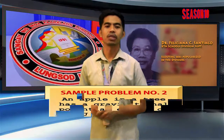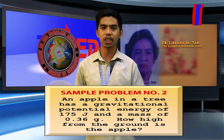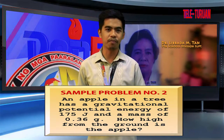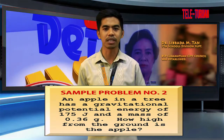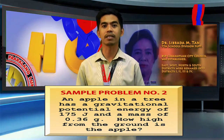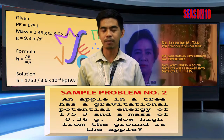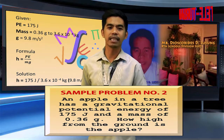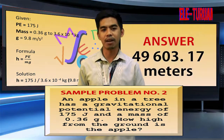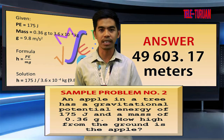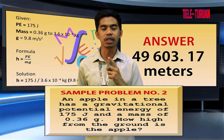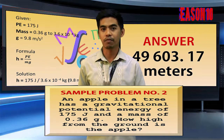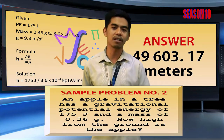Sample problem number two: an apple in a tree has a gravitational potential energy of 175 joules and a mass of 0.36 grams. How high from the ground is the apple? Remembering the formula of height from the general formula of potential energy, we may derive at an answer of 49,603.17 meters. Remember that you need to convert 0.36 grams to kilograms first before substituting it to the general equation.